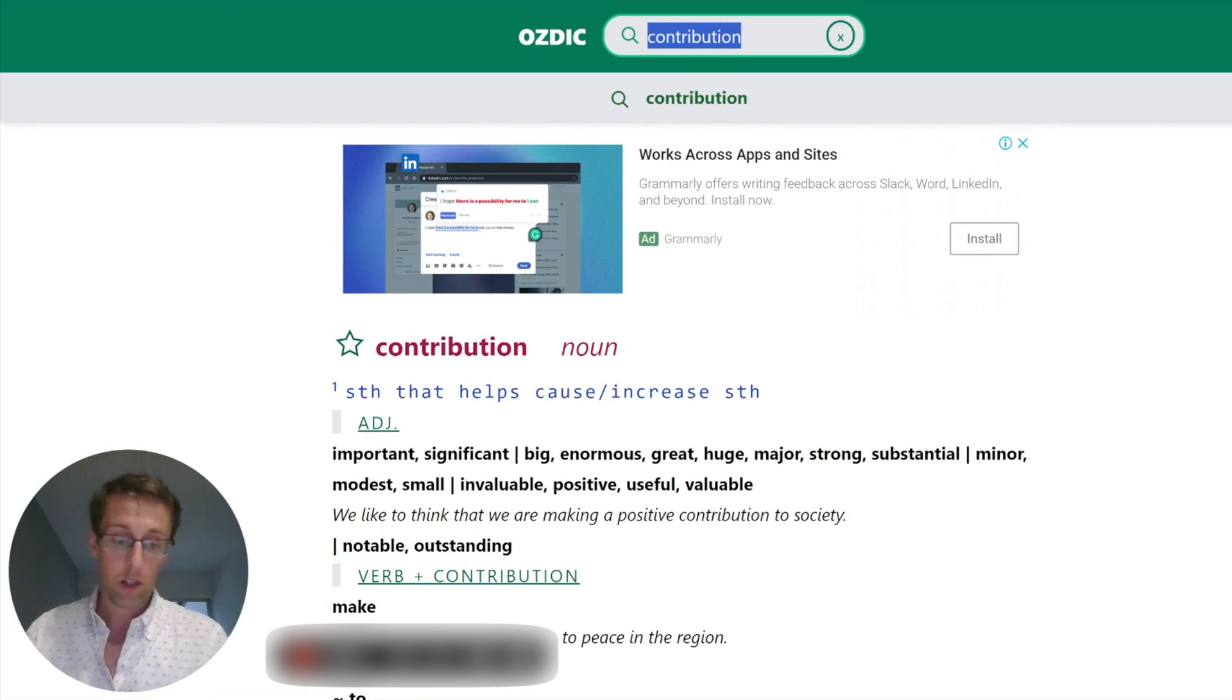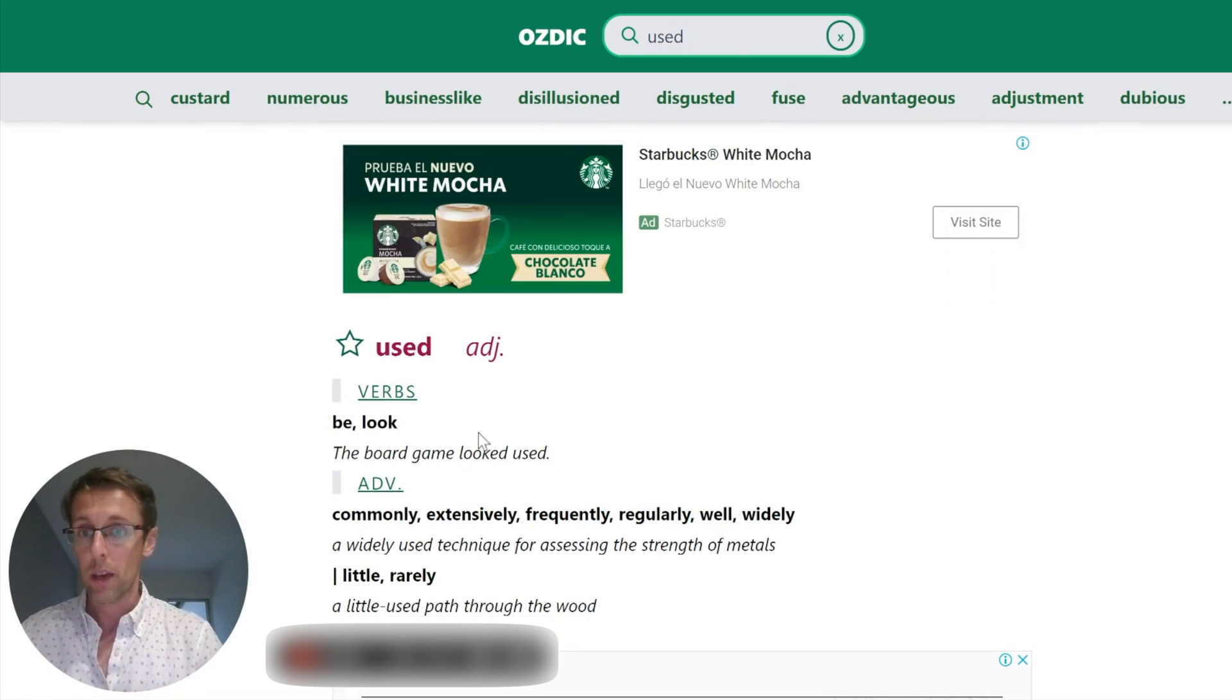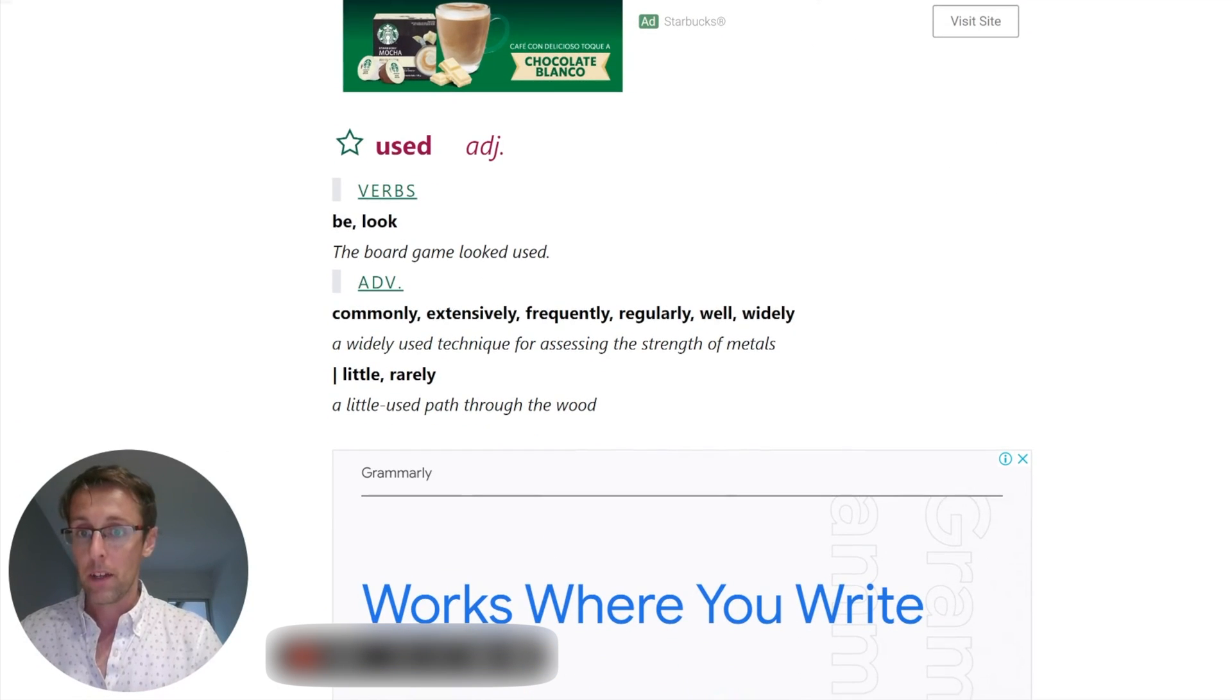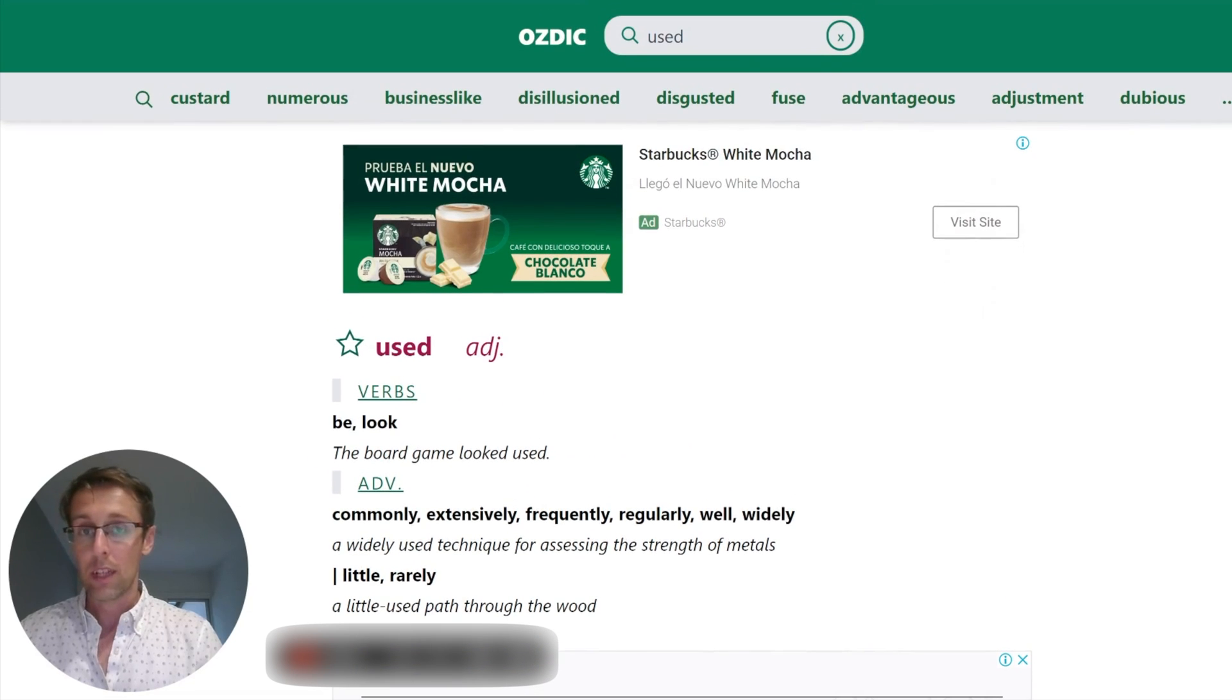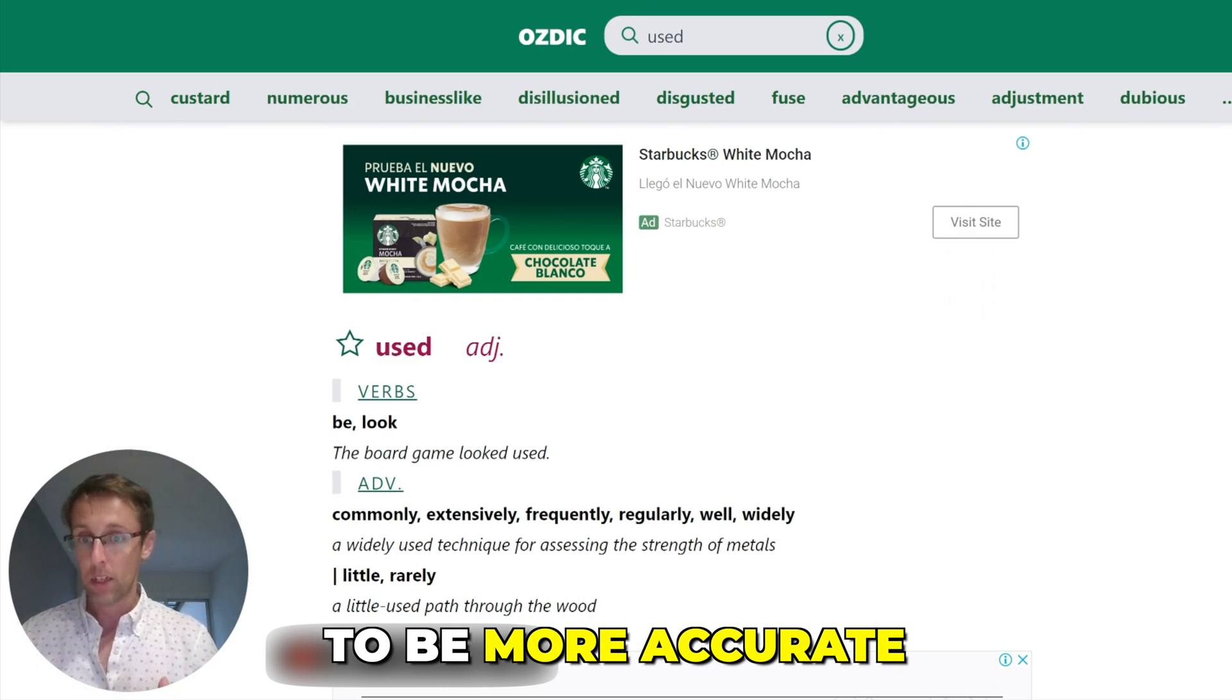So that's one way you can use it. Let me give you another example. You want to talk about something, a concept, let's say, that is used frequently, for example, in your field. But you don't really know how to phrase it correctly using the verb used. So if you put used here, it comes up as a verb. So you can see that, for example, something is commonly, extensively, frequently used, or it's rarely used. So this is incredibly useful if you're stuck and you don't know what are the right words to select, to use with another word. And it can really help you as well to be more accurate.